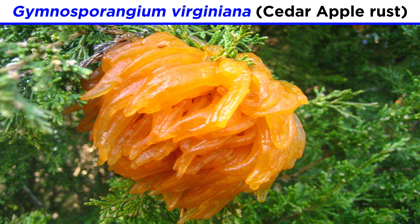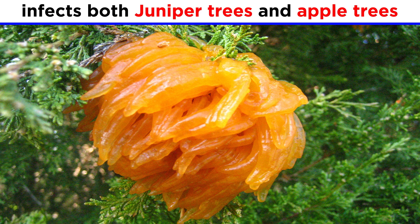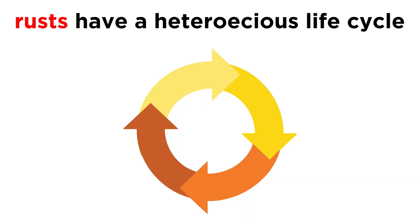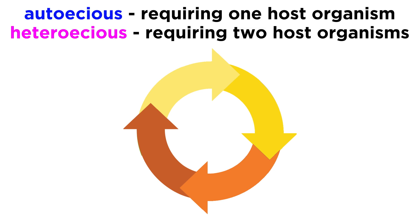A notable rust fungus is Gymnosporangium virginiana, or cedar apple rust, which infects both juniper trees and apple trees to complete its life cycle. When a fungus requires two host organisms to complete its life cycle, it is considered heteroecious. Rust fungi are known for having a heteroecious life cycle. Fungi that need only one organism to complete their life cycle are considered autoecious.